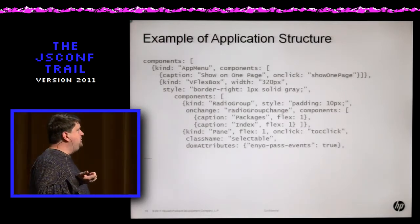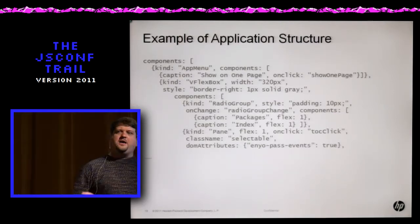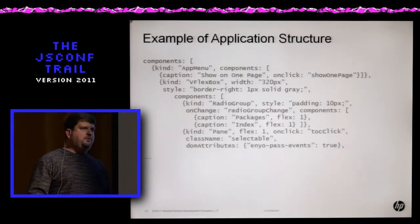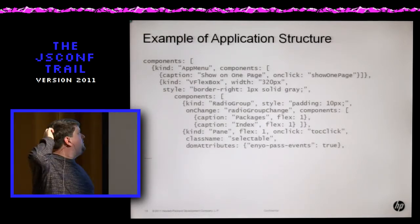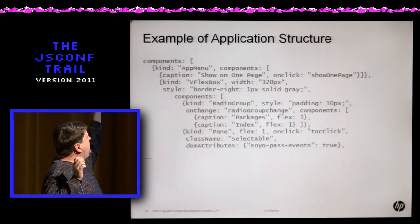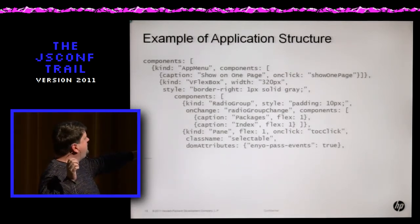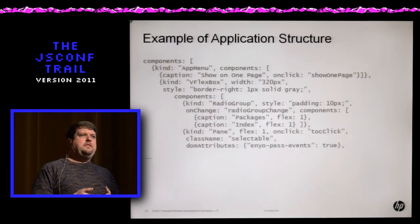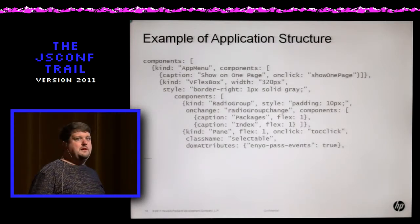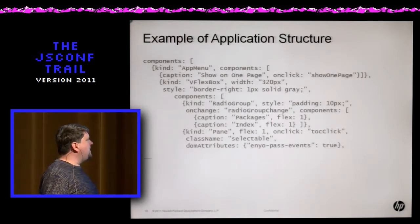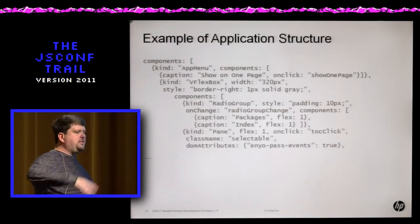Here's an example of application structure — the JavaScript layout rather than HTML — taken from one of our basic applications, a documentation viewer. When you're looking through the Enyo framework, you use an Enyo application that reads the Enyo source to produce docs for you. We're creating an app menu with various properties defined on it. The app menu owns the Flexbox which produces other things. Basically all the items in this nesting tree are owned by the one thing that has the top-level components array, which means the owner can handle all events generated by its children, providing a really nice event model.